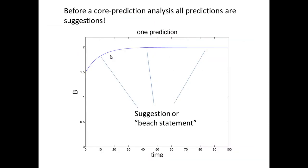Just to repeat: if you haven't done this kind of analysis and you only have one curve, you simply don't know anything. If you don't know what is well-determined and what is not, then all aspects are just suggestions, because you haven't proven yet that any of them are core predictions. Before doing this analysis, with just one simulation, everything is just a suggestion. That's the summary of what a core prediction is.